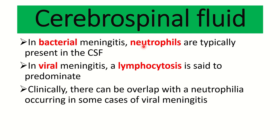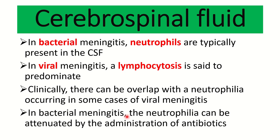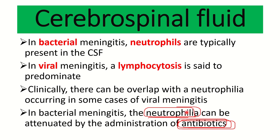Clinically there can be overlap, with neutrophilia seen in some cases of viral meningitis. In case of bacterial meningitis, neutrophilia can be attenuated by administration of antibiotics. If we administer antibiotics and then collect the CSF, neutrophilia may be absent or normal, because the antibiotic kills the bacteria, reducing inflammation and neutrophil count. Therefore, we should collect CSF before starting antibiotics to prevent attenuation of neutrophilia.